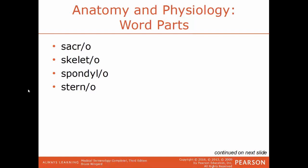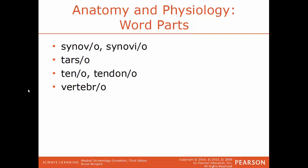Sacro refers to the sacrum, where you'll find your tailbone. Skeleto refers to the skeleton in general. Spondyl refers to the vertebrae in the backbone. Sterno refers to the sternum, or breastbone. Synovo or synovio refers to the synovial membrane, which produces synovial fluid to lubricate the space between joints. Tars or tarsus refers to the ankle bone. Teno or tendino refers to tendons. Vertebro refers to the vertebrae.